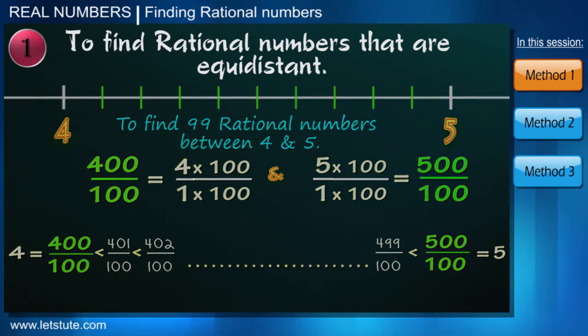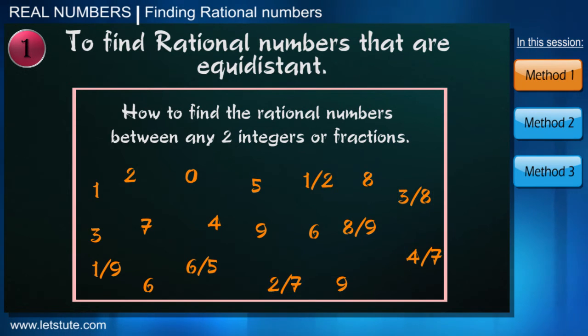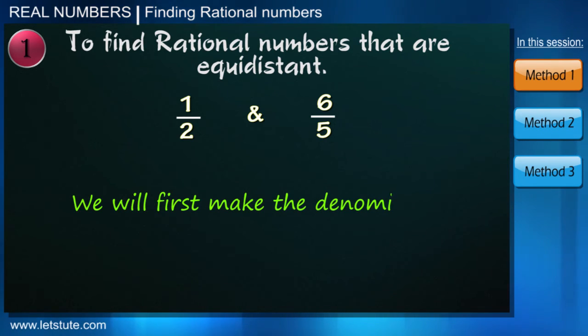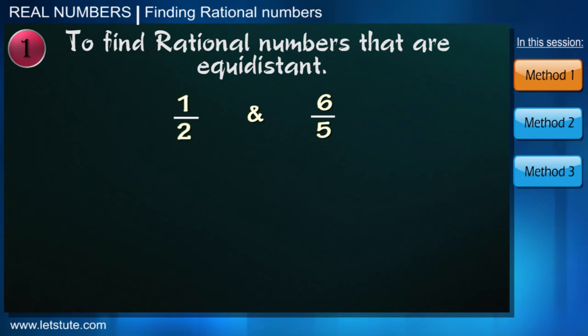So this was about integers. Can we apply the same trick to find the rational numbers between any two fractions? Let's find out. Suppose the two fractions are 1 upon 2 and 6 by 5. Now if we notice in the trick, we were actually making denominators of both the fractions same. So to find the rational numbers between these two fractions, we should make the denominator of both the fractions same. So can you tell me a way?